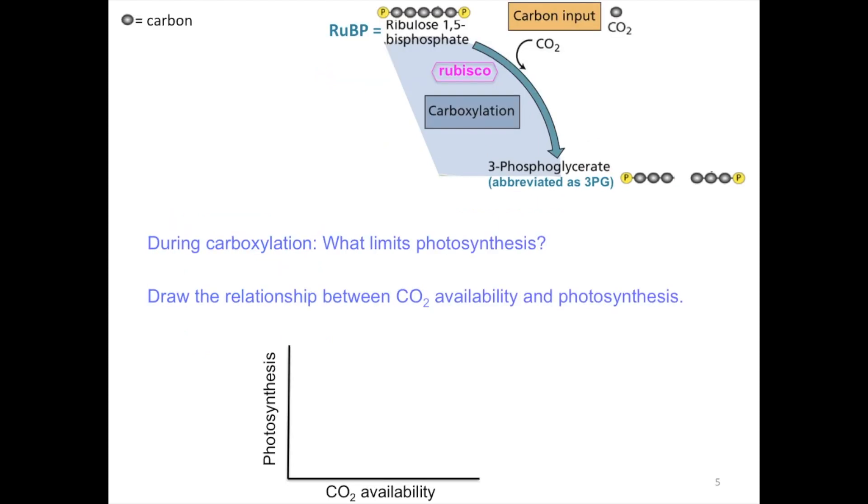In the spirit of a typical lecture for Plant Phys 206, I'd like us all to take a pause here to think a little bit more deeply about this first phase of the Calvin cycle. So during this particular phase, carboxylation, what would you say limits photosynthesis? Press pause to think about this for a couple of minutes.